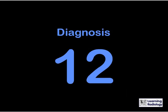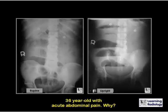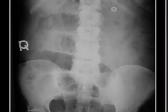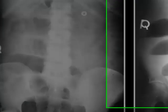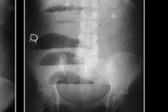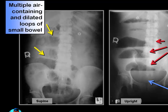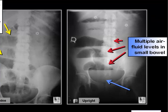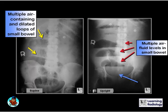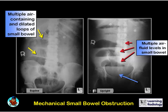Why did this 36-year-old have acute abdominal pain? On the supine view of the abdomen there are multiple air-containing dilated loops of small bowel. On the upright view they contain multiple air-fluid levels, and there is no air in the rectum or sigmoid. These findings are characteristic of a mechanical small bowel obstruction.